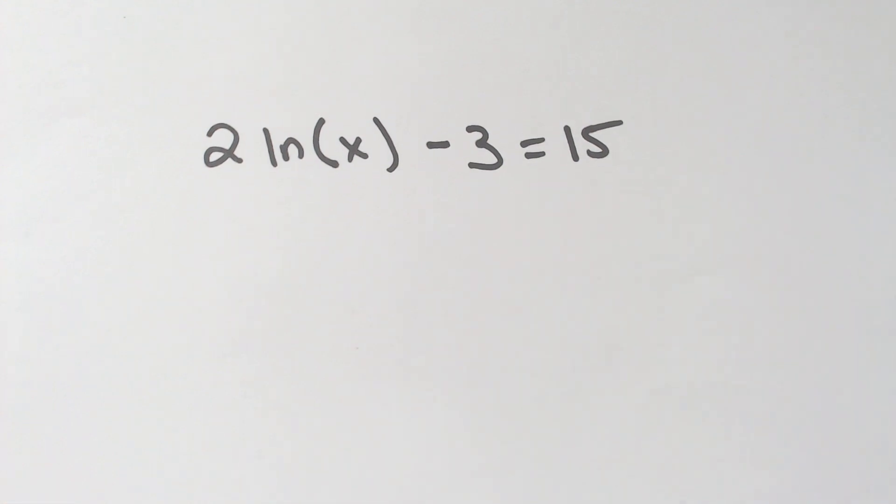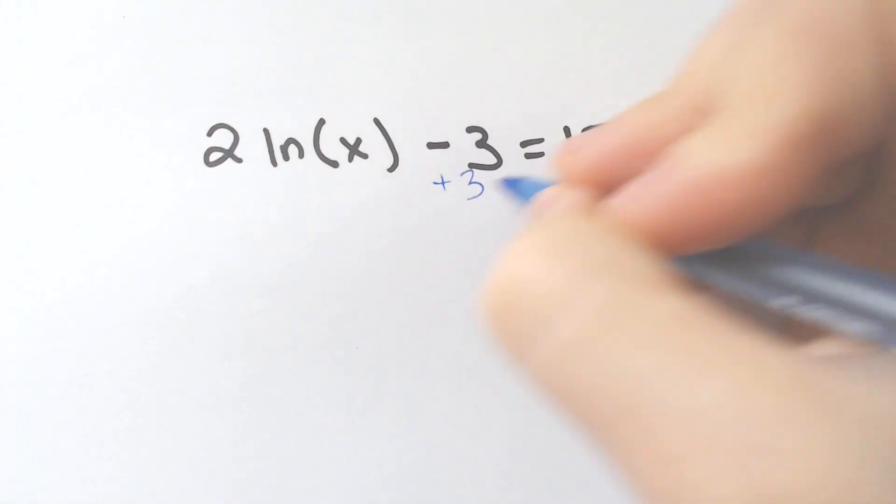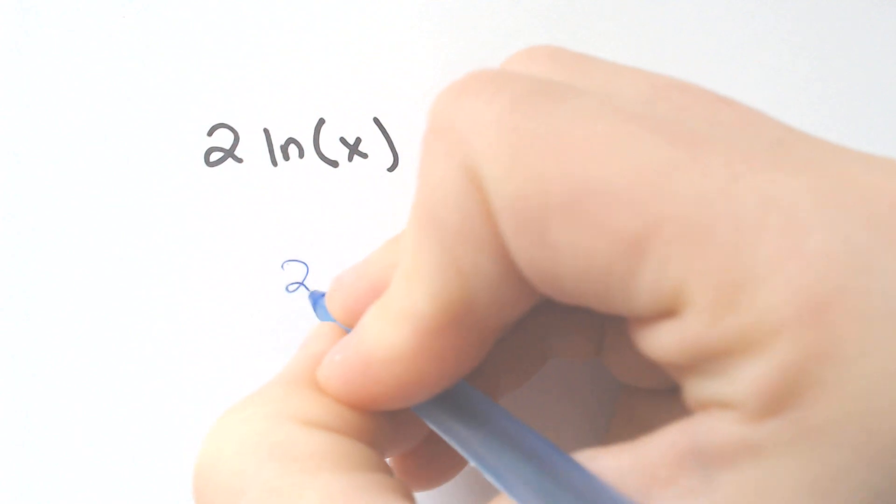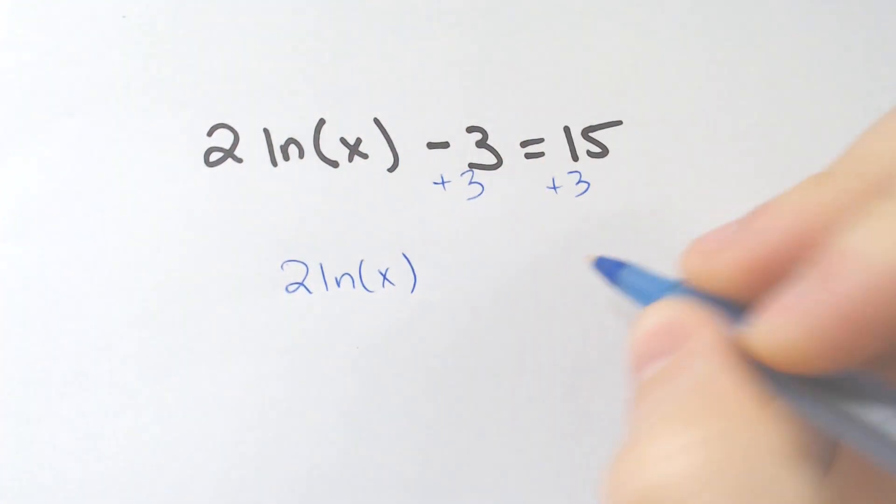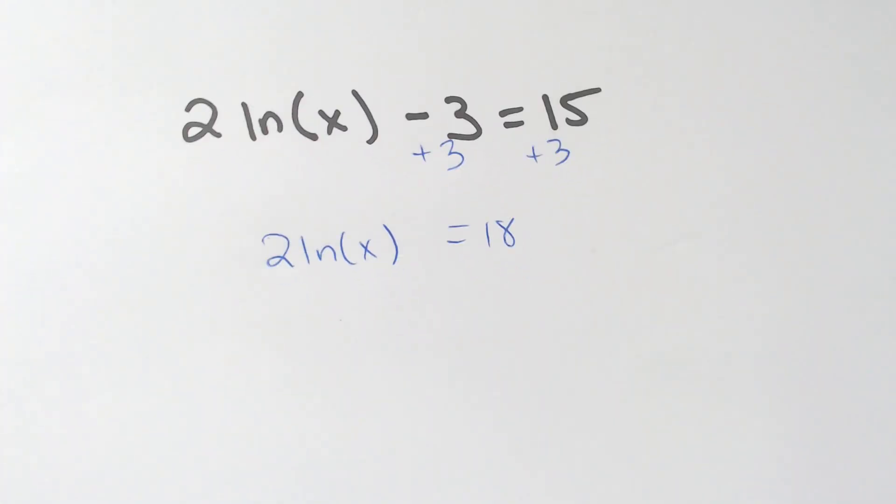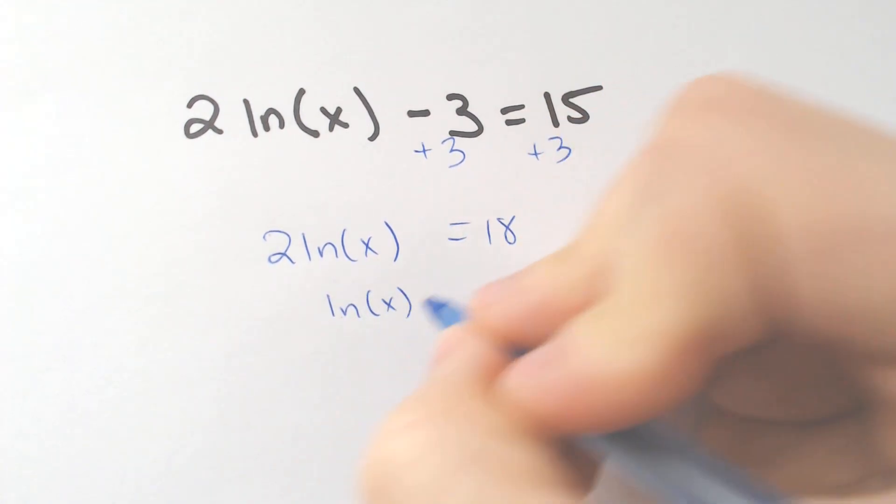Add 3 to get the LN by itself. We're going to add 3, add 3, 2 LN of X would equal 18. Divide by 2, LN of X would equal 9.